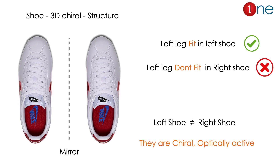Chirality can be understood by a shoe analogy. A shoe has a chiral 3D structure — a left shoe only fits the left leg and does not fit the right leg, and vice versa. They are mirror images of each other and are not superimposable in three-dimensional space. This is the basis of chirality. Compounds that differ this way are called chiral and are mostly optically active.